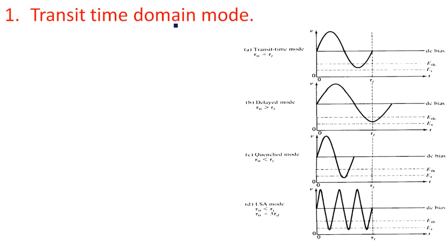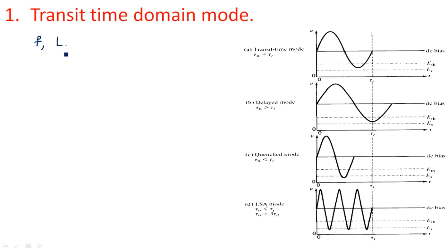These are the different waveforms related to the four different modes. The first waveform is for transit time domain mode, the second is for delay domain mode, the third is for quenched domain mode, and the last is for limited space charge accumulation mode. These four modes are completely depending on two factors: the frequency of operation and the length of the material.